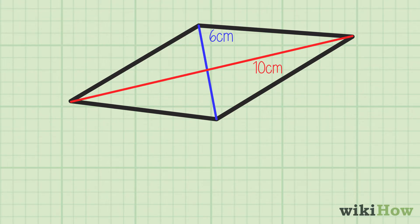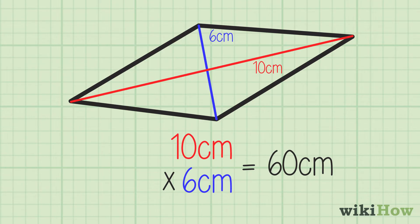Once you find the length of each diagonal, multiply the lengths together. In this case, 10 centimeters times 6 centimeters equals 60 centimeters.